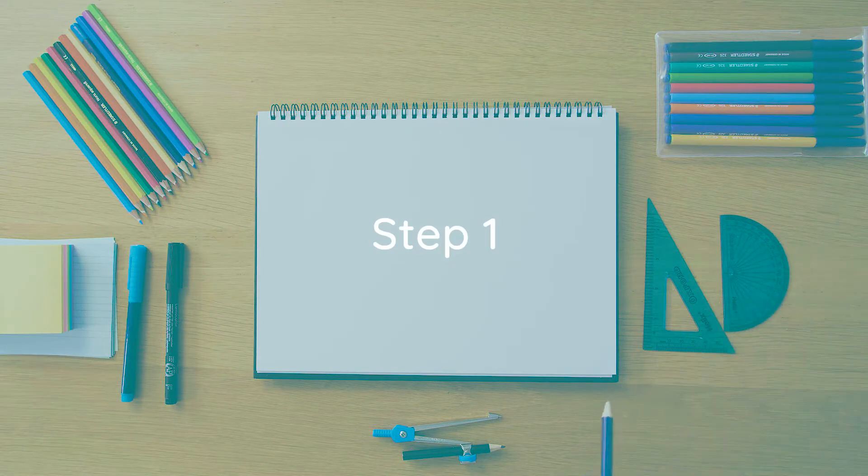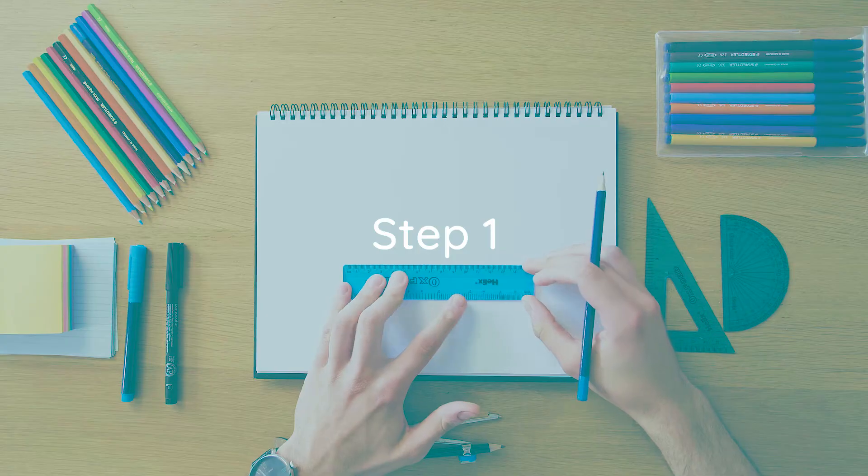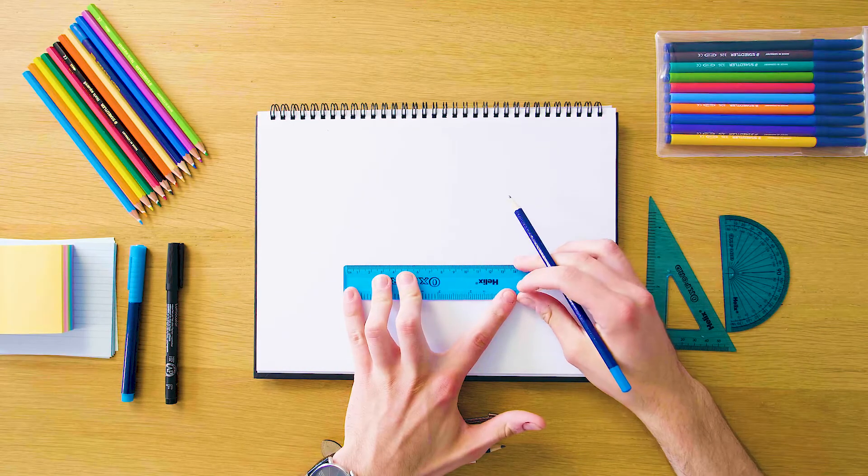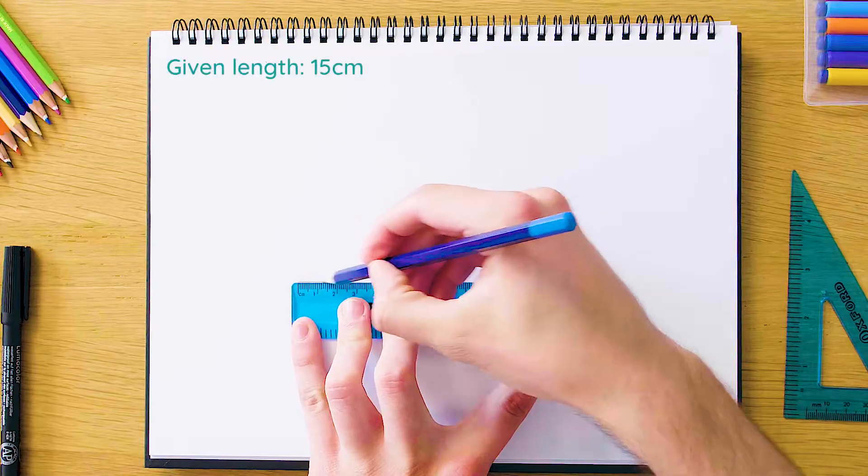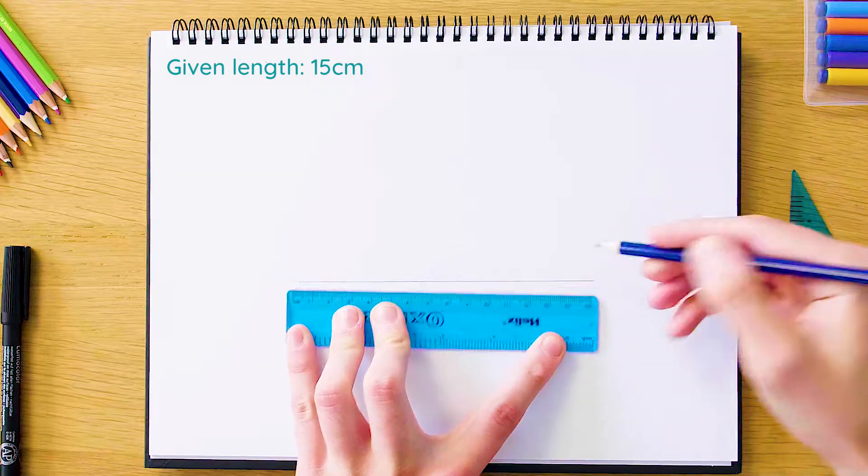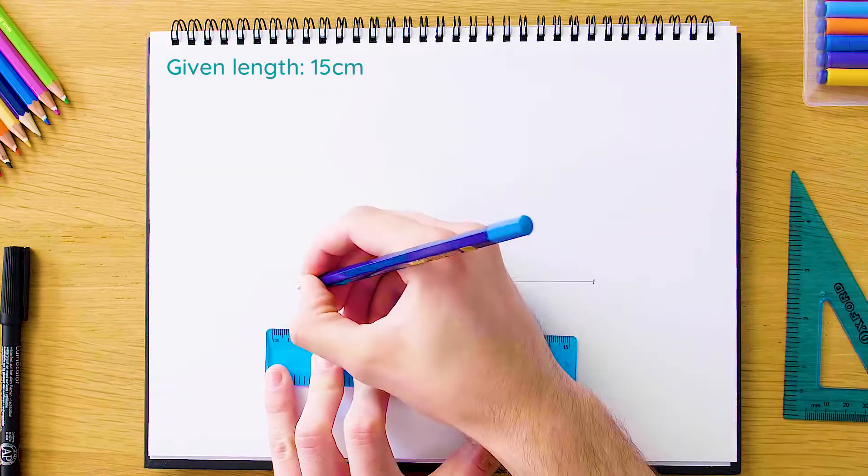Our first step is going to be to draw our longest side, which is usually what I do first, but as long as you draw all three it doesn't really matter. I'm going to start with 15 centimeters across, and that's our longest line.